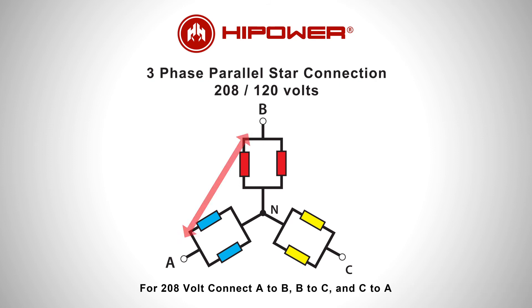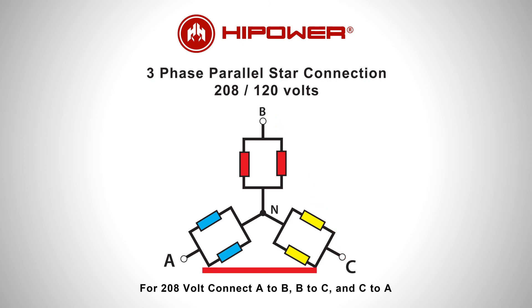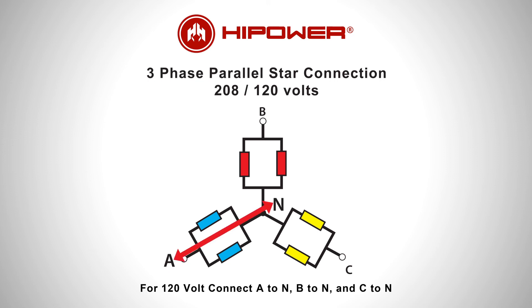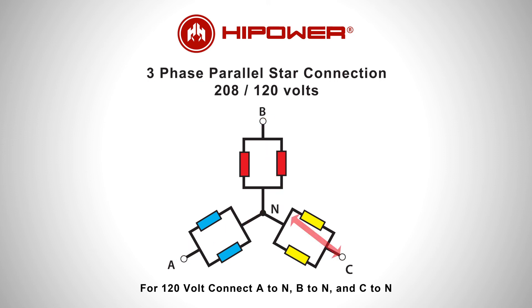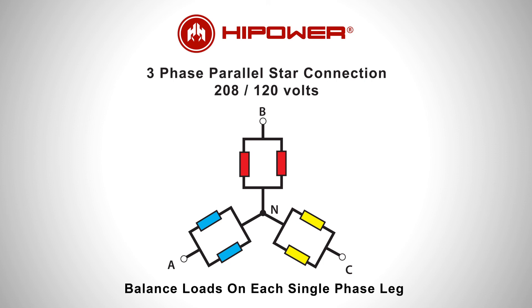Connect B to C and C to A for 208 volt three-phase connections. It is important to balance all three legs when connecting single-phase loads.